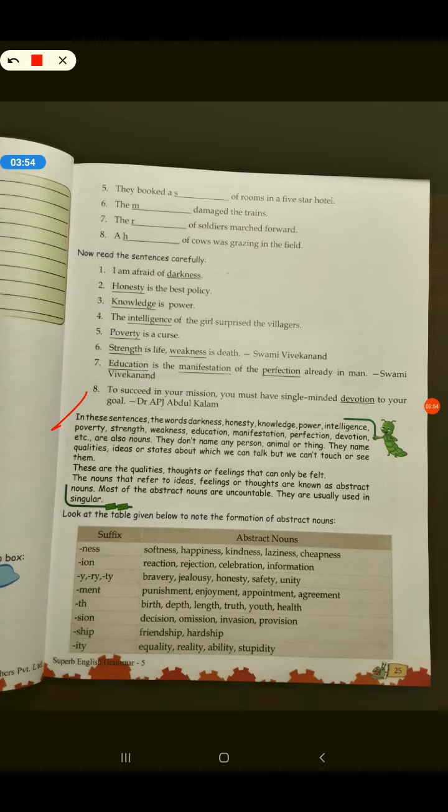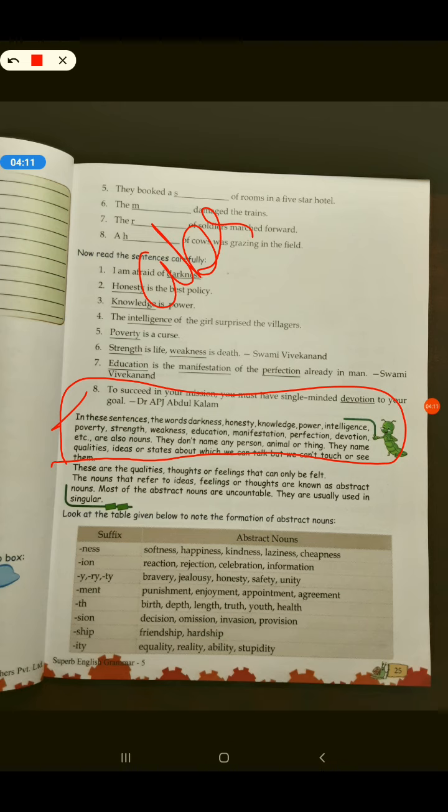They don't name any person, animal or thing. They name qualities, ideas or state about which we can talk but we can't touch or see them. See, here we are talking about abstract nouns.